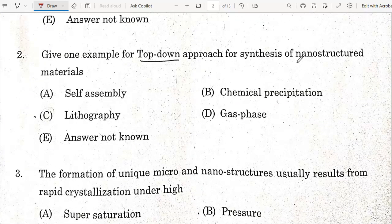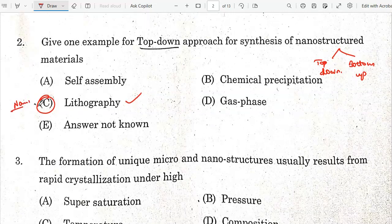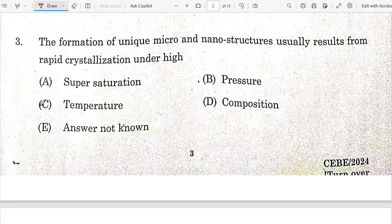Next question: Give one example for top-down approach for synthesis of nanostructure materials. In top-down approach, we are using lithography method. Examples include collider lithography, photolithography, and nano contact printing. So option C is the correct answer.